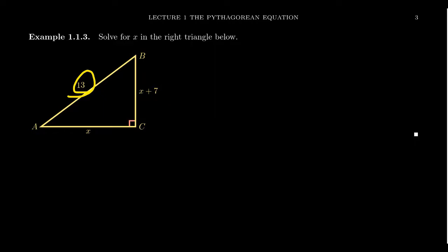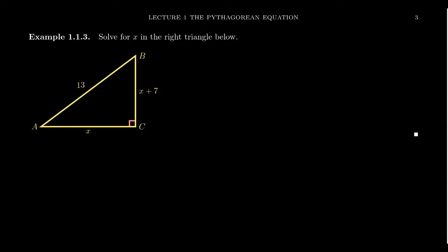Using the Pythagorean equation, the sum of the squares of the two legs equals the square of the hypotenuse. So we get X² + (X + 7)² = 13². This sets up a Pythagorean relationship between the sides of the triangle, giving us a quadratic equation to solve for X.